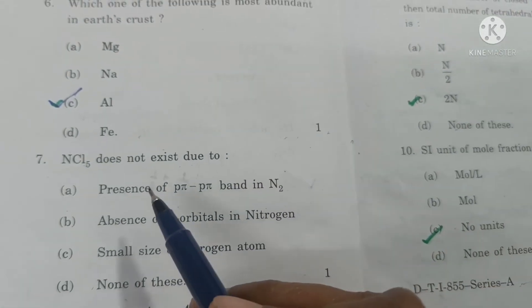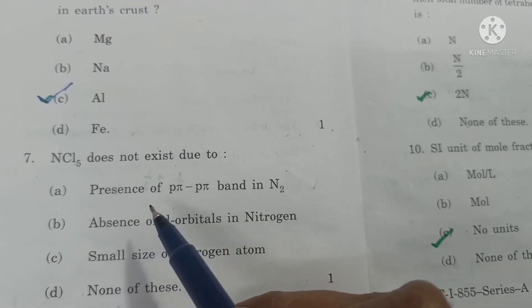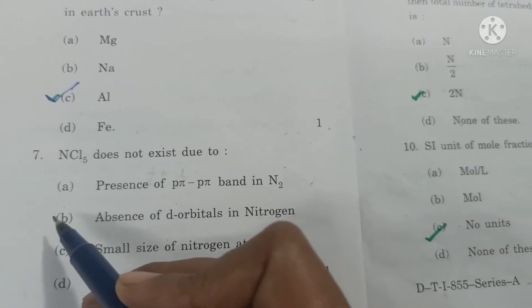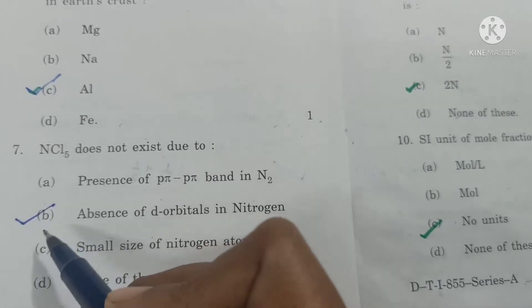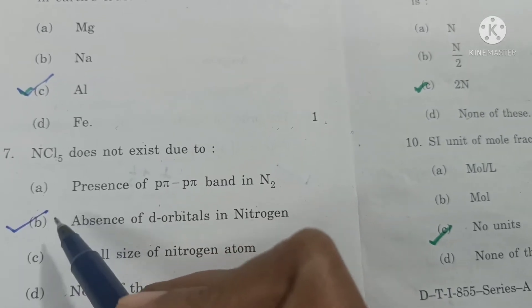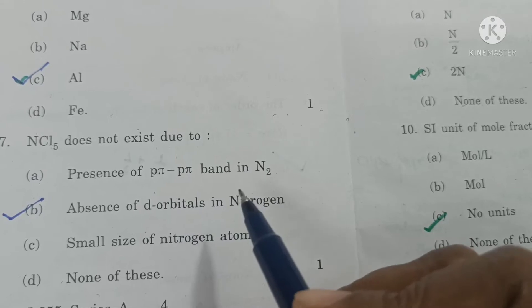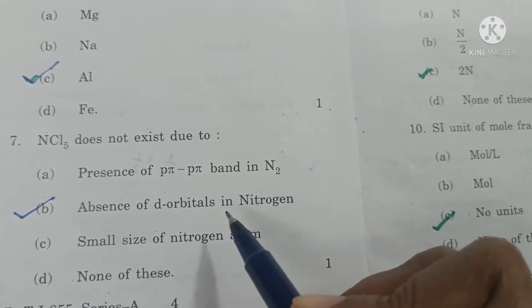NCl5 does not exist due to absence of d orbitals in nitrogen. Nitrogen cannot expand its octet because there are no vacant d orbitals.